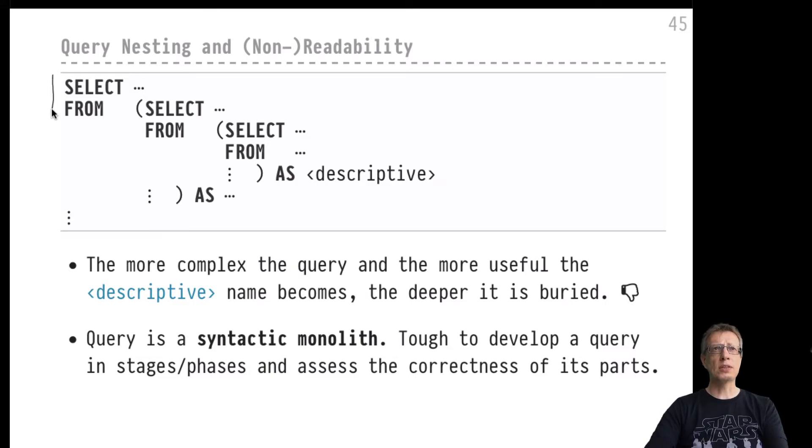This would be the skeleton of a deeply nested query. As you can see, the query author has made some attempt to assign descriptive names to row variables and probably also to column names inside the large query. The larger these queries become, the more important these descriptive names become—they make it possible to comprehend what's going on inside such a large query. However, the more complex and deeply nested such queries become, the more hidden away are these descriptive names that are actually meant to aid readability.